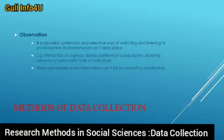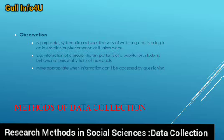One method is observation — a purposeful, systematic, and selective way of watching and listening to an interaction or a phenomenon as it takes place. For undergraduate and graduate students, observation is the first method from which we start any sort of research. We start studying any phenomenon through observation. For example: interaction of a group, directory patterns of a population, or studying behavior or personality of individuals — these can be observed through observation.